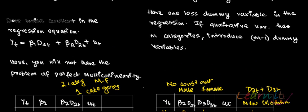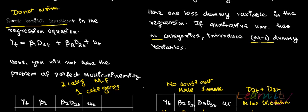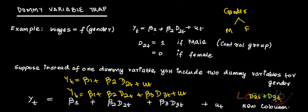Either, in case you have m categories, you should run the regression with m minus 1 dummy variables. Or, you should not include the constant term — avoid using a constant. Then also there will be no problem of dummy variable trap. So this was the dummy variable trap.